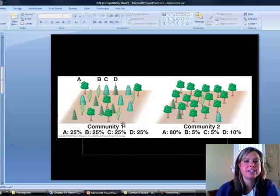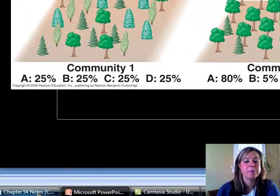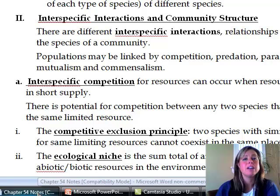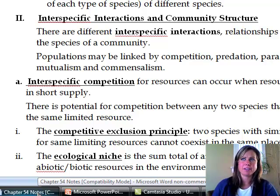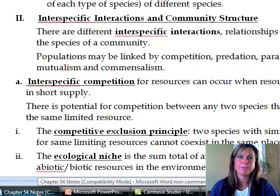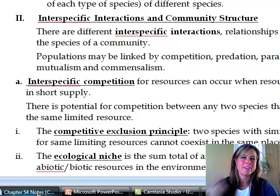So species richness has to do with the diversity of species. How many different species are in your area? The reason that's important to look at is because, let's say we counted 86,000 fish, but they were all one type of fish. That's not very diverse, right? So you want to have species richness to tell you about diversity.